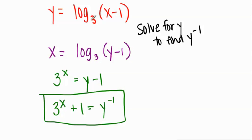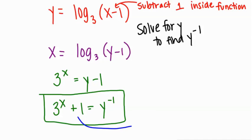So you don't just take the base and raise it to the argument. You really need to think about the inverse operations. I'm subtracting 1 inside the function. Therefore, its inverse operation would be to add 1 outside its inverse function.